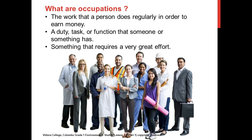Our first topic is occupations — different occupations. What are occupations, children? Occupations are the work that a person does regularly in order to earn money. In simple words, we can call them jobs. People do jobs to earn money. Your parents, adults, your relations, and your elder siblings may be doing occupations to earn money. They have a duty, a task, or a function in their jobs, and also some responsibilities to do at their job. Jobs require a very great effort.